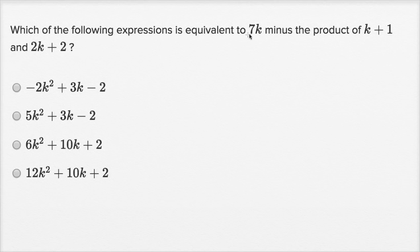Which of the following expressions is equivalent to 7k minus the product of k plus one and 2k plus two? All right, so this is going to be 7k minus the product of k plus one and 2k plus two.